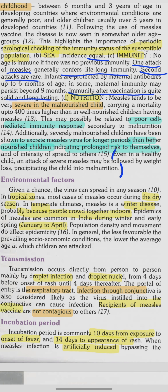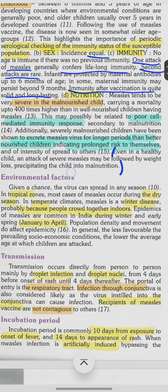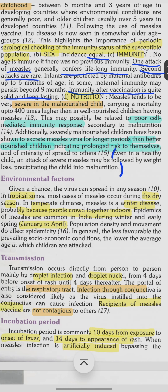In malnourished children, the virus is excreted for longer periods than in better-nourished children, prolonging the risk of transmission. Even in a healthy child, a severe attack of measles may be followed by weight loss, precipitating the child into malnutrition.